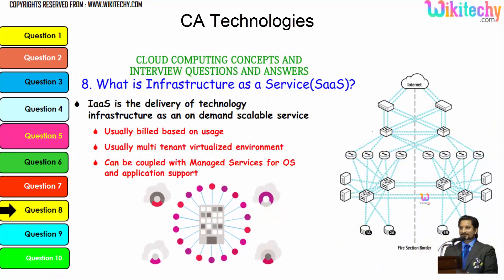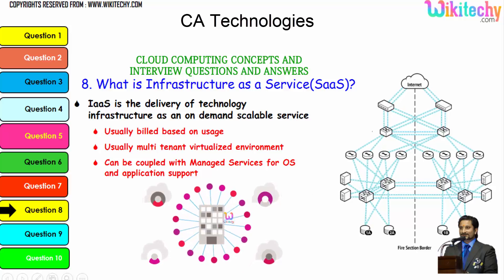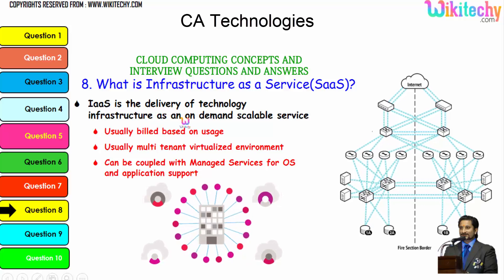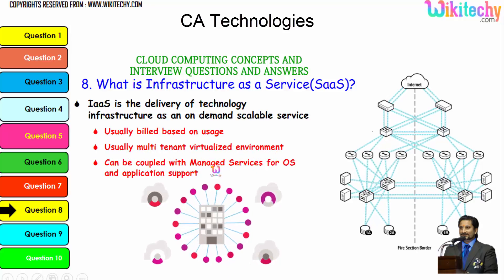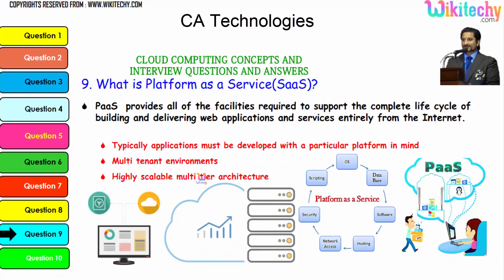Now let's talk about Infrastructure as a Service. With IaaS, you will be allocated a server and you can put whatever software you want on it. IaaS is the delivery of technology infrastructure as an on-demand deliverable service — scalable, usually billed based on usage, multi-tenant virtualized, and can be coupled with managed services for OS and application support.